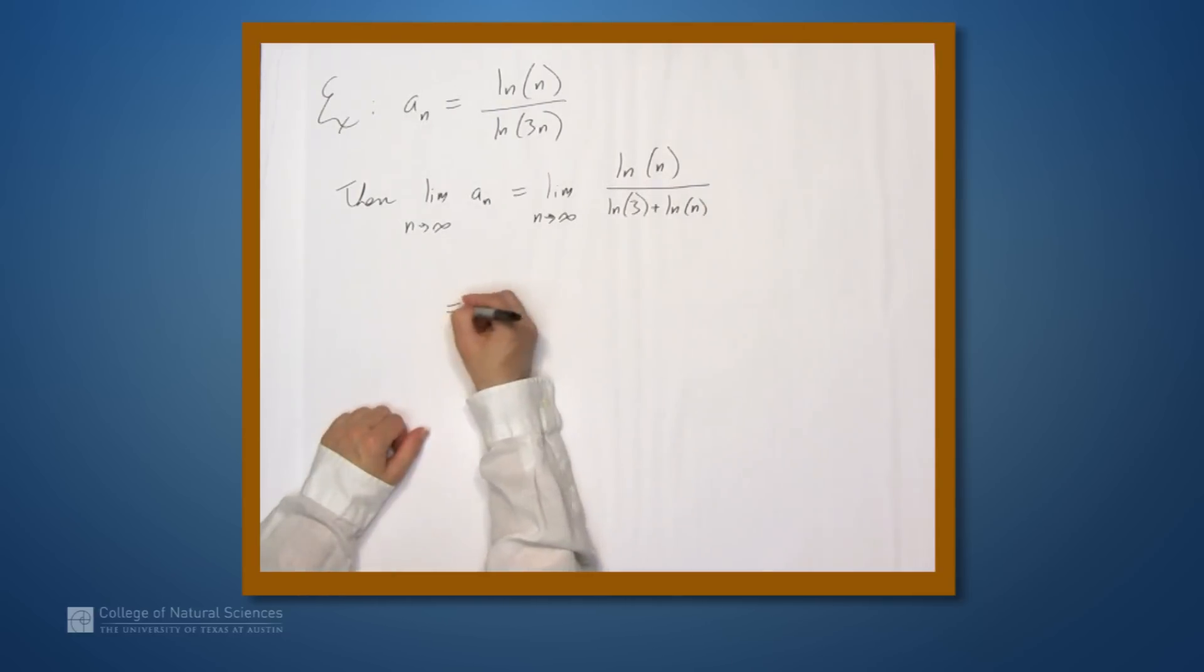So we get the limit as n goes to infinity of 1, right, natural log of n over itself, divided by the natural log of 3 over the natural log of n plus 1.